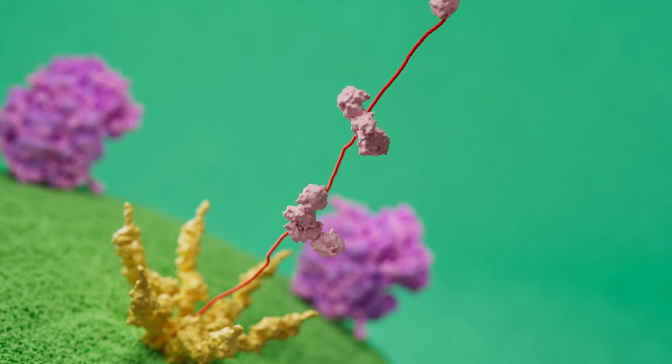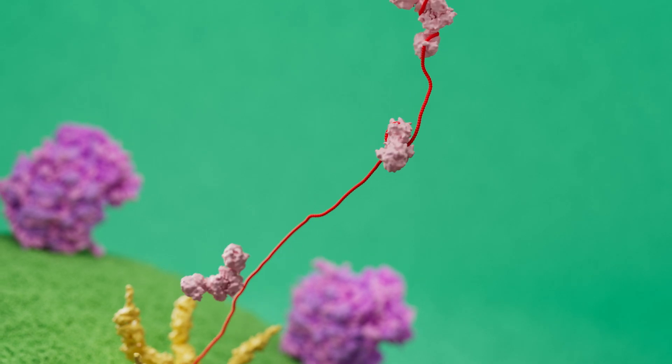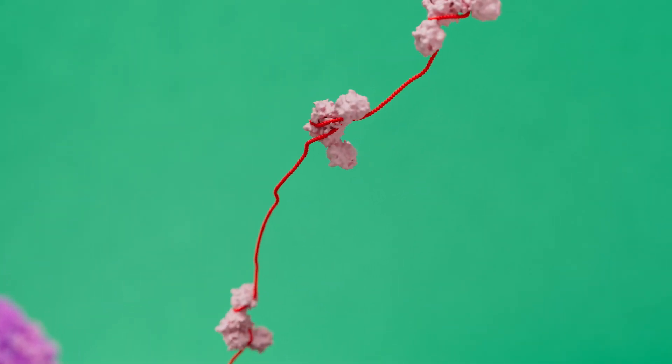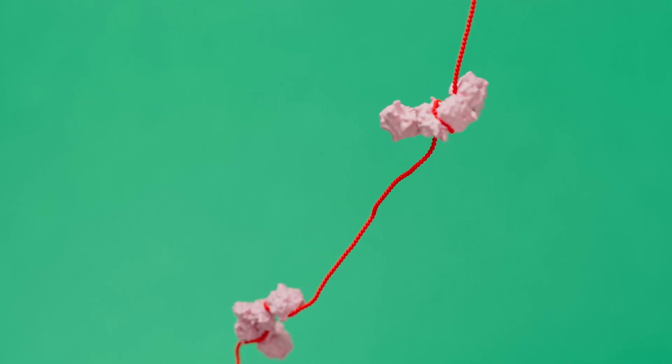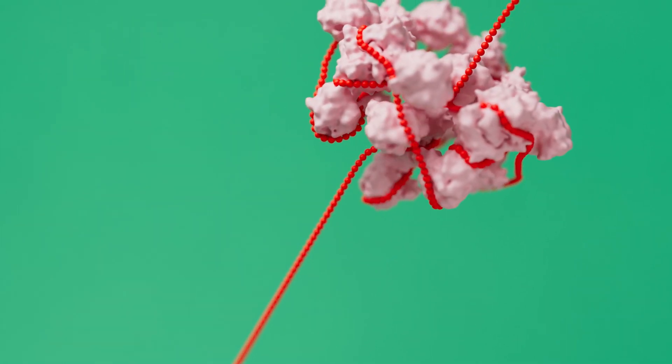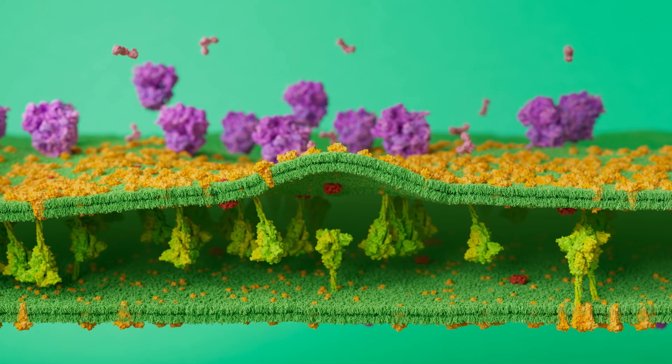The newly created nucleocapsid protein sits right by the DMV pore, ready to grab onto the viral genome RNA as it exits the DMV. The nucleocapsid protein then begins packaging the RNA into what will become the contents of the new viral particles.